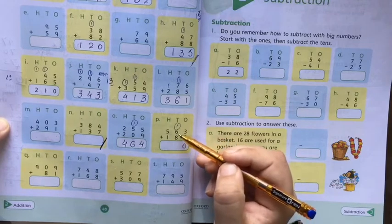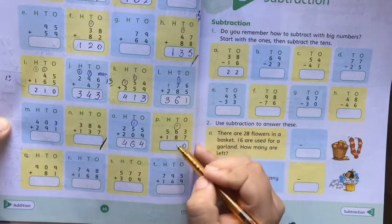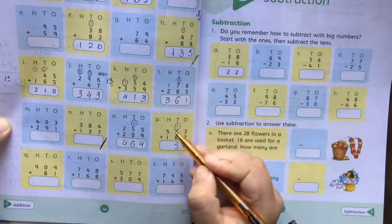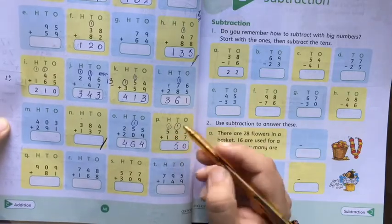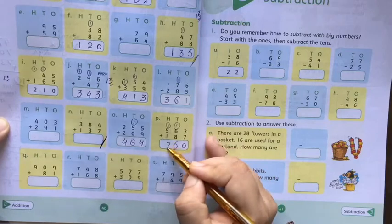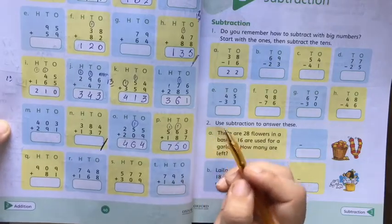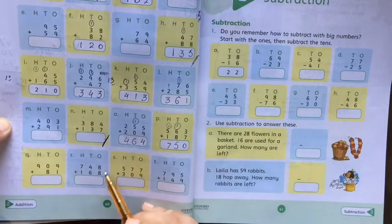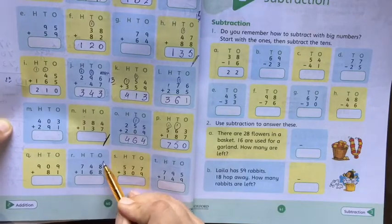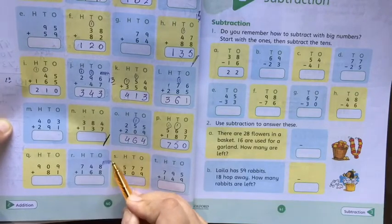6 plus 8 equals 14, plus 1 carry equals 15. 9 plus 1, 8 plus 8. 8 is 9.